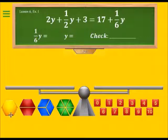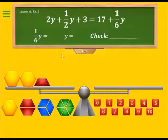It says 2y, so we will need two of the yellow blocks. Then it says plus half of y. Half of y will be the red block plus a three. This is a constant of three, so we need a cube with the number three.